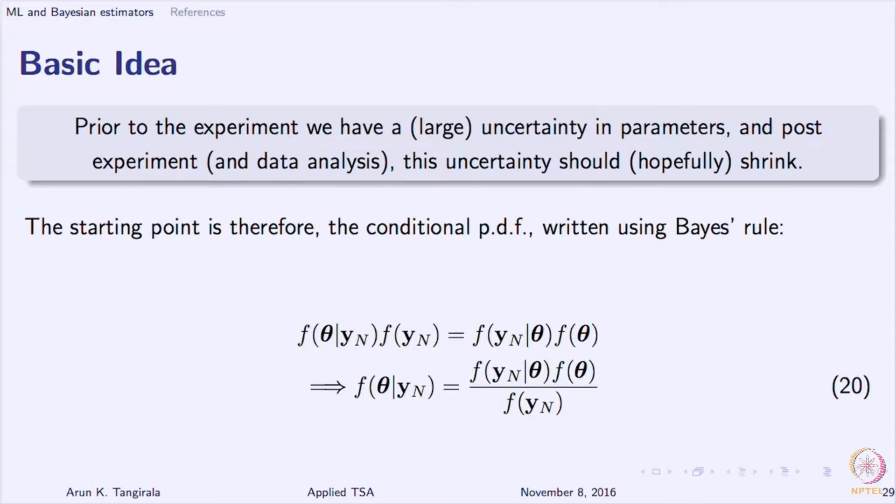And that is why you have the equation f(theta|Y) is f(y|theta) times f(theta) divided by f(y). But we have already said the denominator is independent of theta in that equation that you see on the screen. In equation 20 there, the denominator is independent of theta. So, I can assume it to be some constant. f(y) is a scalar value. So, it is some constant that is independent of theta.